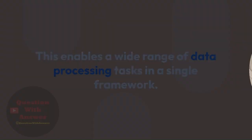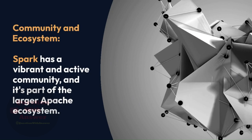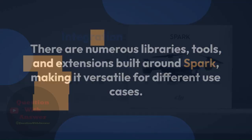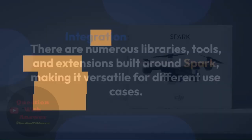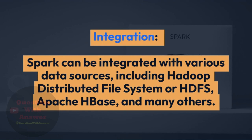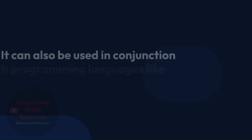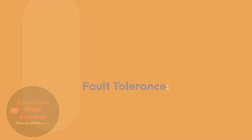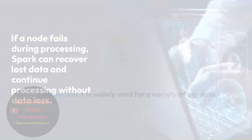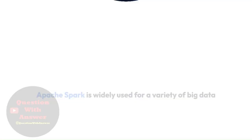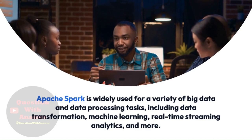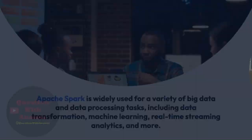Community and Ecosystem: Spark has a vibrant and active community and is part of the larger Apache ecosystem. There are numerous libraries, tools, and extensions built around Spark, making it versatile for different use cases. Integration: Spark can be integrated with various data sources, including Hadoop Distributed File System (HDFS), Apache HBase, and many others. It can also be used with programming languages like Python, Scala, and Java. Fault Tolerance: Spark is designed to be fault-tolerant; if a node fails during processing, Spark can recover lost data and continue processing without data loss. Apache Spark is widely used for data transformation, machine learning, real-time streaming analytics, and more. It's a valuable tool for data engineers, data scientists, and developers working with large-scale data processing and analytics.